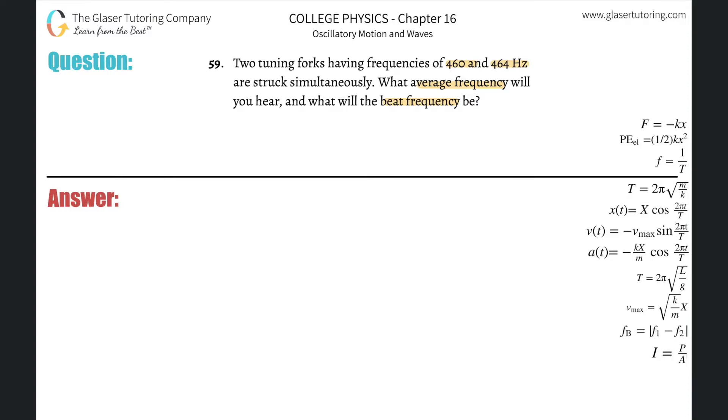So the first question about the average, don't overthink this. Literally the average is just going to be the average. So the average frequency, F sub A for average, is simply going to be the addition of the two, 460 plus then the 464, all divided by the number of values you have, which is 2. So the average is going to be 462 hertz.